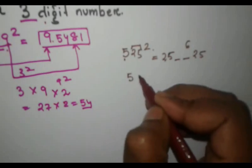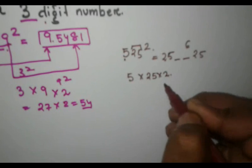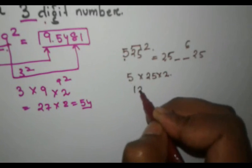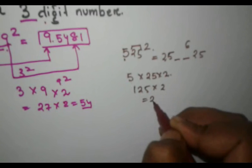Then what we have to do? 5 into 25 into 2. So 125 into 2 is equal to 250.